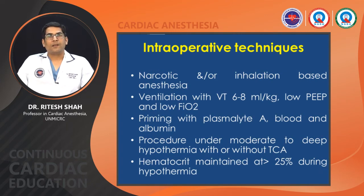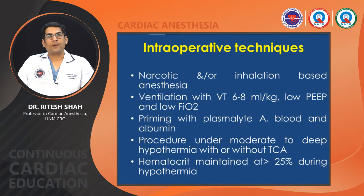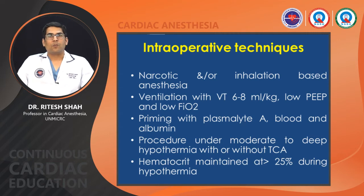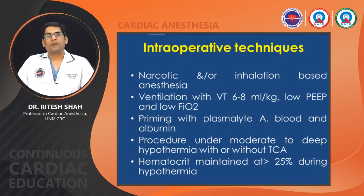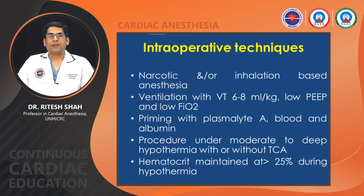Narcotic and inhalation-based anesthesia can be given. Ventilation with 6–8 mL/kg tidal volume with low PEEP and low FiO2. Priming with plasmalyte, blood, and albumin. The procedure should be done under moderate to deep hypothermia with or without cardiac arrest. Total circulatory arrest may be used. Hematocrit is maintained at more than 25% during hypothermia.